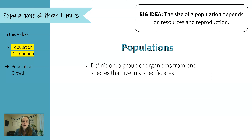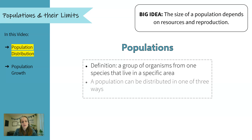A population is a group of organisms — they're all the same species and they live in a specific area, so a specific ecosystem. Scientists generally think about populations as being distributed or spread out in one of three ways, so we'll run through those quickly.